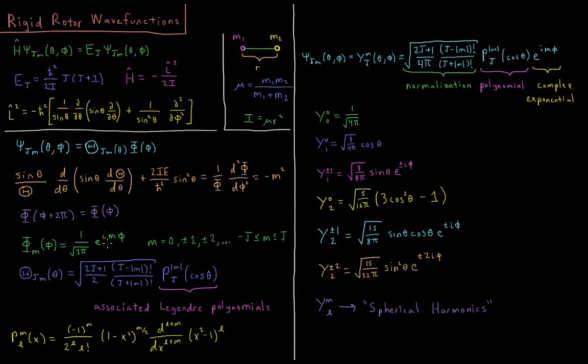This is a complex exponential. So the value m, quantum number m can take on values 0, plus or minus 1, plus or minus 2, all the way up to plus or minus j. So j is greater than or equal to m, which is greater than or equal to minus j.